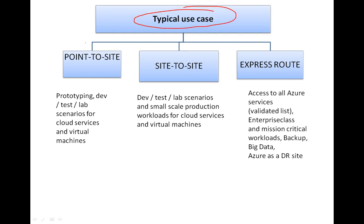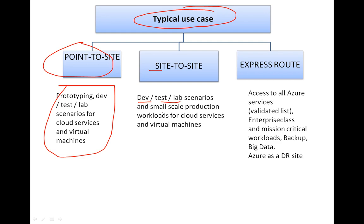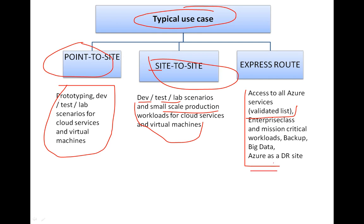Typical use cases: Point-to-Site is ideal for prototyping, development, testing, and lab scenarios for cloud services and virtual machines. For Site-to-Site, it is used for cross-premises VPN configurations. For ExpressRoute, it is suited for access to all Azure services, enterprise-class and mission-critical workloads, backup, big data, Azure as a DR site — essentially very high-level requirements.